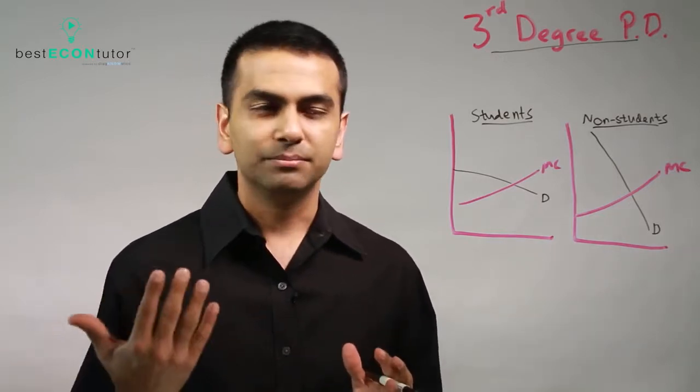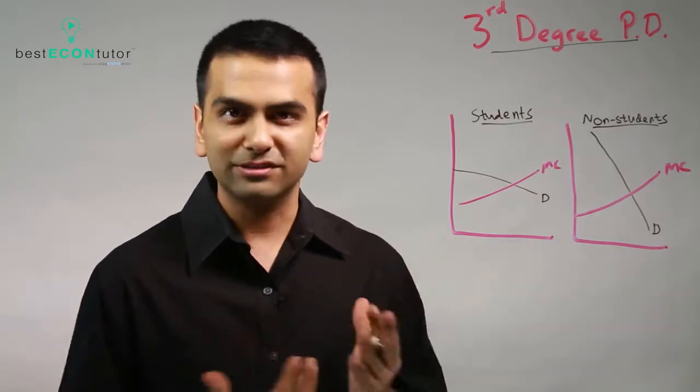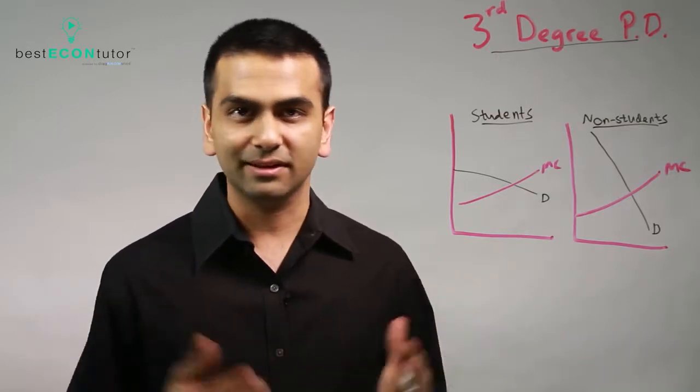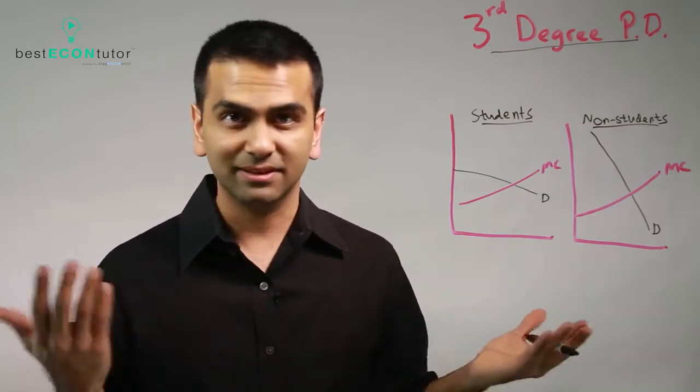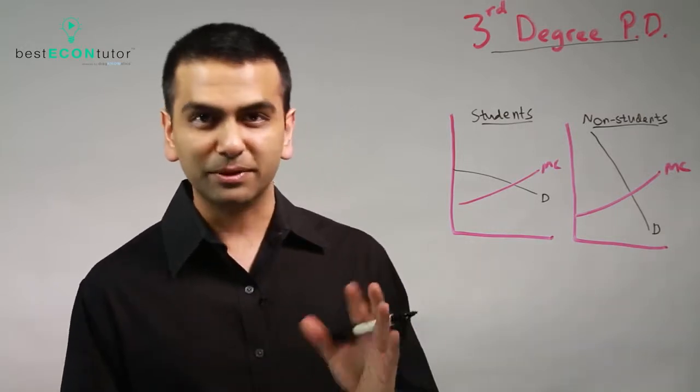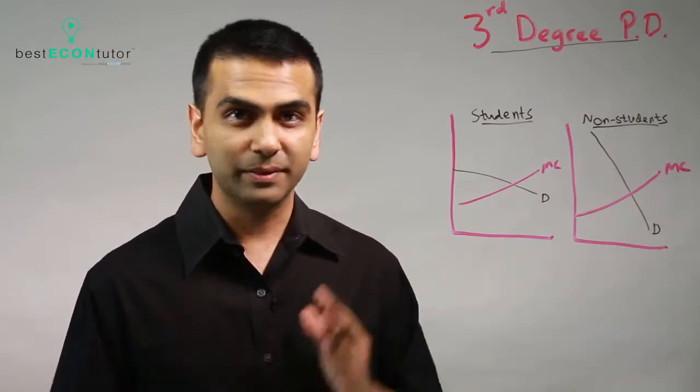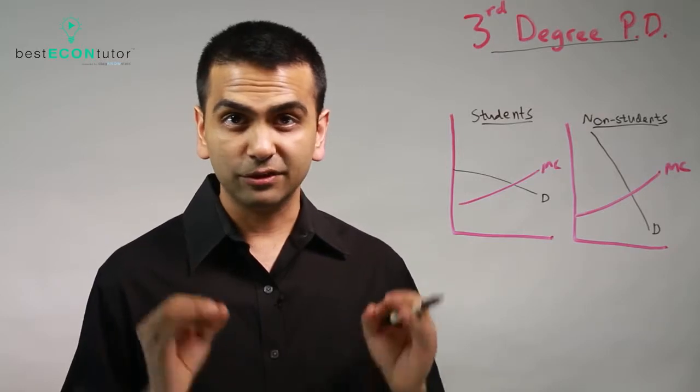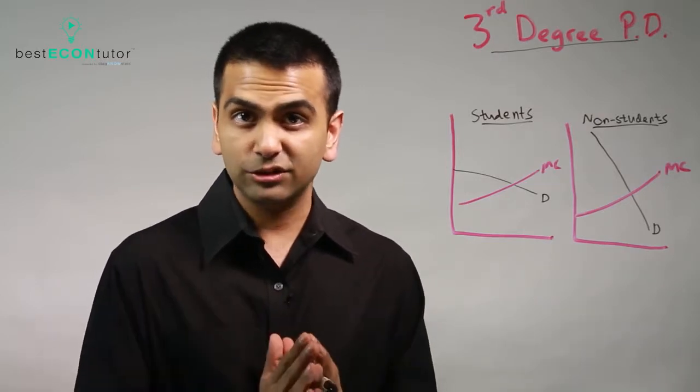On the other hand, part of you is also thinking, but you know all these non-students, all these adults that are just sort of coming in, it's like I could charge them more than seven and they'd still come. So part of you wants to lower the price for the students and raise the price for everyone else, but you can't if you're not allowed to discriminate. So let's say you actually are allowed to do third-degree price discrimination, meaning by the group.